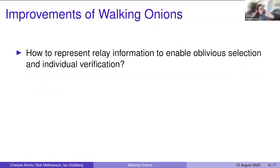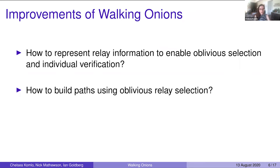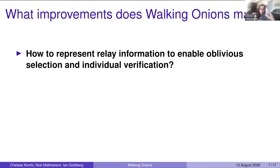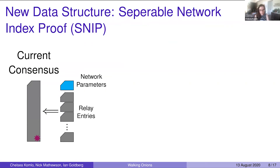We'll now do a deep dive into Walking Onions, answering three questions: how to represent relay information to enable oblivious selection of relays; how to use oblivious relay selection and verification to build paths for clients; and how to perform even more efficient circuit construction. The current consensus in TOR today consists of a set of relay entries representing all relays in the network and a constant-size amount of network parameters, authenticated by TOR's directory authorities.